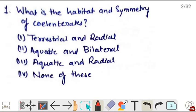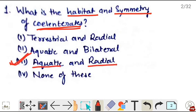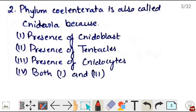First question: what is the habitat and symmetry of cnidarians? So cnidarians are aquatic, that is both freshwater and marine, and they have radial symmetry. Correct is option 3, aquatic and radial respectively. Next, phylum Coelenterata is also called Cnidaria because of the presence of special structures called cnidoblast or cnidocytes. So correct is option 4, both 1 and 2.